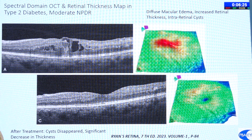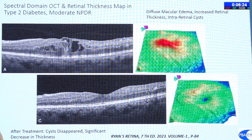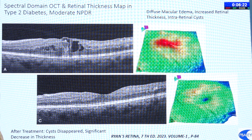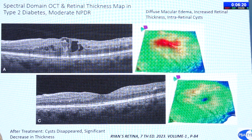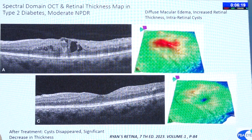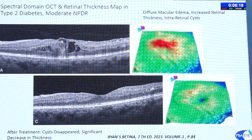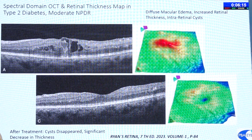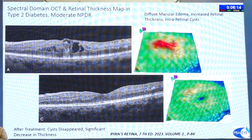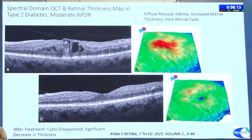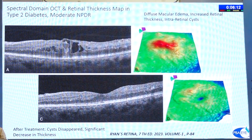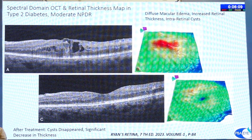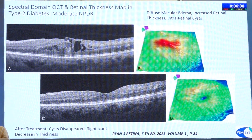Here you can see the spectral OCT and retinal thickness map in type 2 diabetes with moderate NPDR. The first image is before treatment; the lower one is after treatment, showing a significant decrease in thickness and disappearance of cysts.